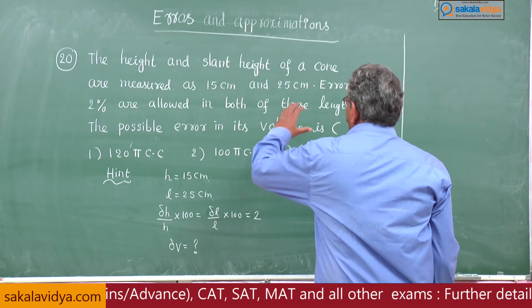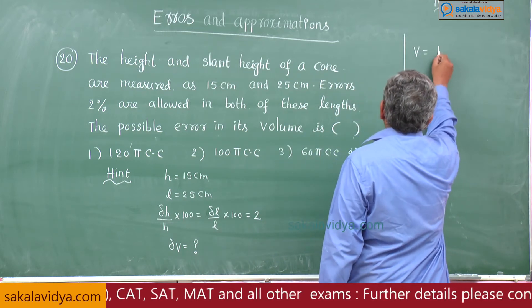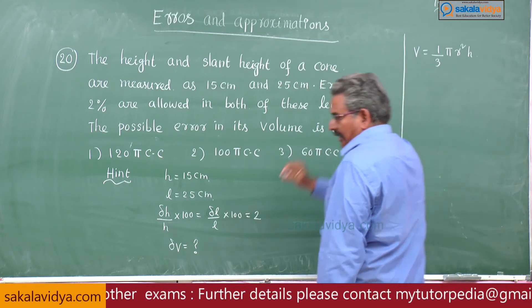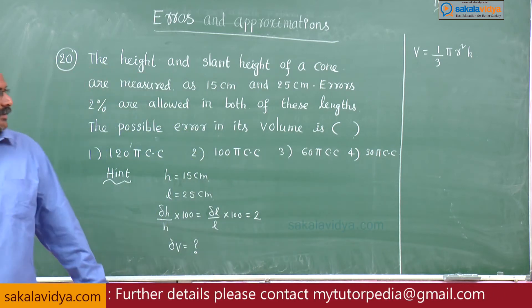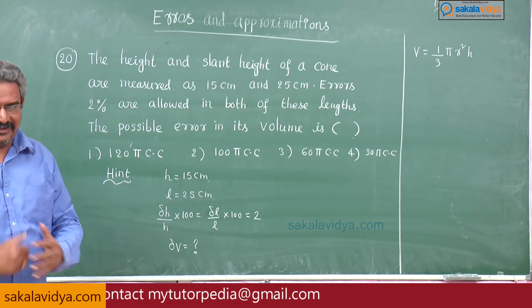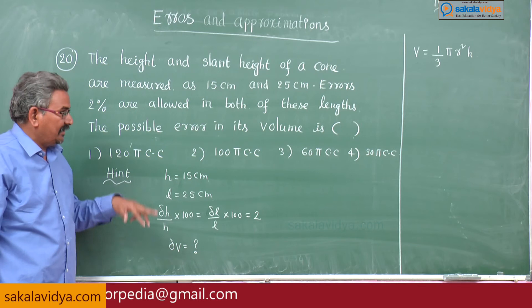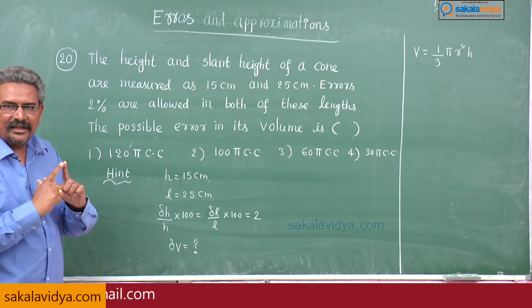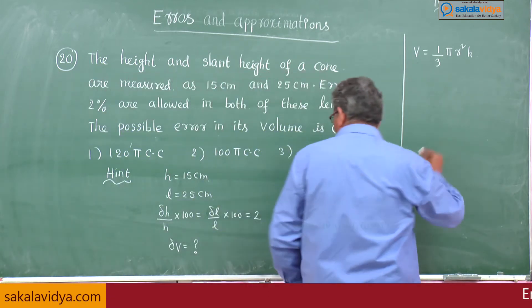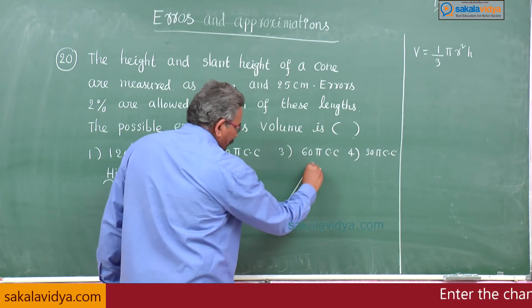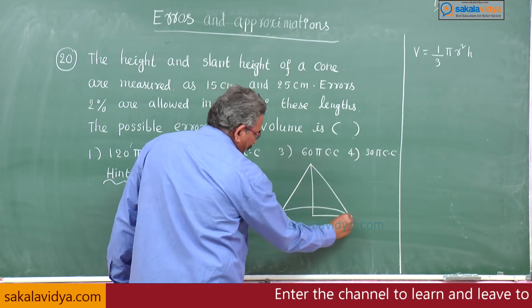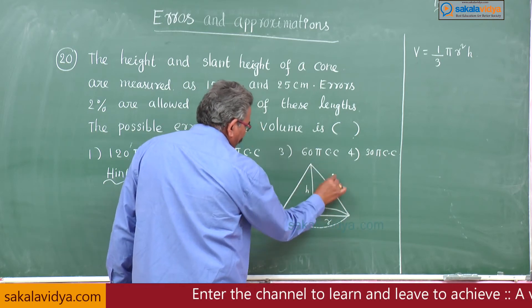Volume of the cone is given by v equals 1 by 3 π r squared h. Here is one question: this is a function of radius and height, but radius is not given, it is l and h. That means it is necessary that r squared should be changed in terms of h and l. See, suppose if you take the figure, this is cone figure, this is base radius r, height, this will be l. So right angle triangle.